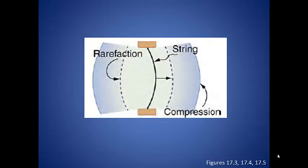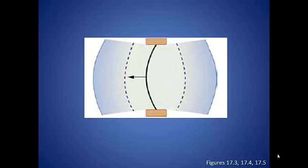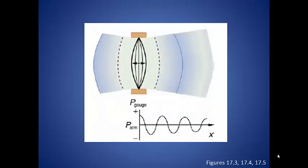So as our string moves to the right, we get areas of high pressure called compressions to the right of the string. Behind it on the left side, lower pressure areas are created called rarefactions. As the string moves to the left, it creates a compression to the left and a rarefaction to the right. This motion continues and creates a series of compressions and expansions that move out from the string in the form of a sound wave.